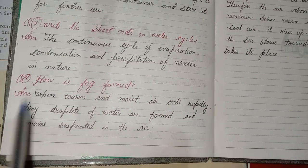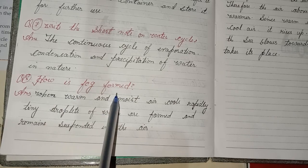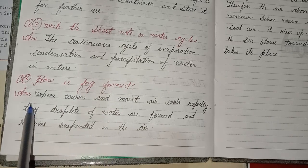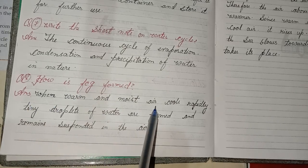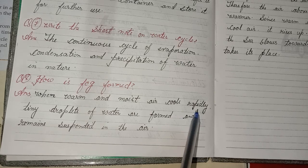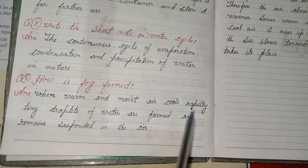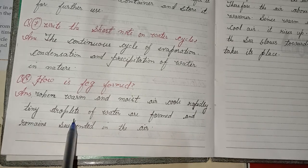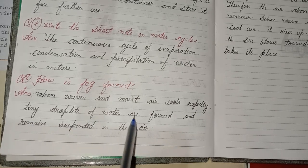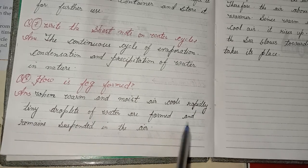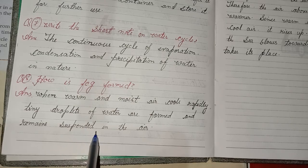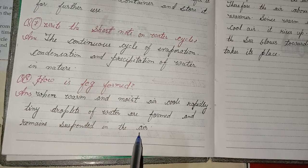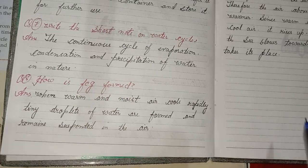Eighth detailed question: How is fog formed? Answer: When warm and moist air cools rapidly, tiny droplets of water are formed and remain suspended in the air.